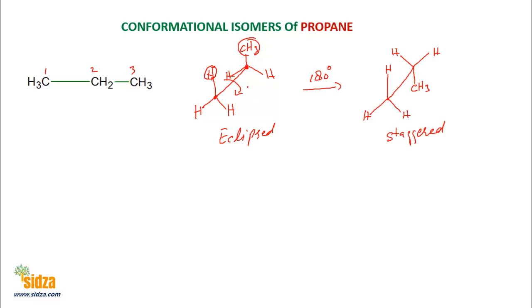If you do a rotation around this carbon-carbon single bond and rotate one carbon by 180 degrees, the methyl group moves and now the groups are no longer eclipsed. They have a little more distance compared to the eclipsed state, so there is less repulsion. That's why the staggered conformation is more stable than the eclipsed one. This is the sawhorse projection.